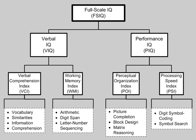The WAIS IV measure is appropriate for use with individuals aged 16 to 90 years. For individuals under 16 years, the Wechsler Intelligence Scale for Children (WISC), for ages 6 to 16 years, and the Wechsler Preschool and Primary Scale of Intelligence (WPPSI), for ages 2½ to 7 years 7 months, are used. Intelligence tests may be utilized in populations with psychiatric illness or brain injury in order to assess level of cognitive functioning, though some regard this use as controversial.